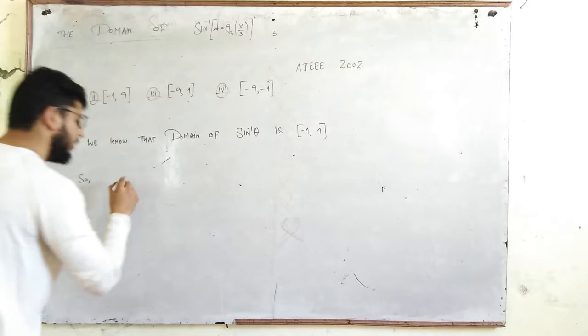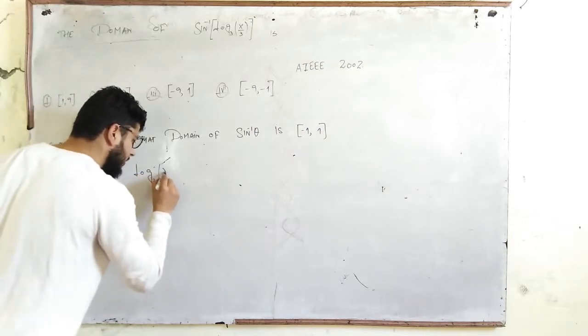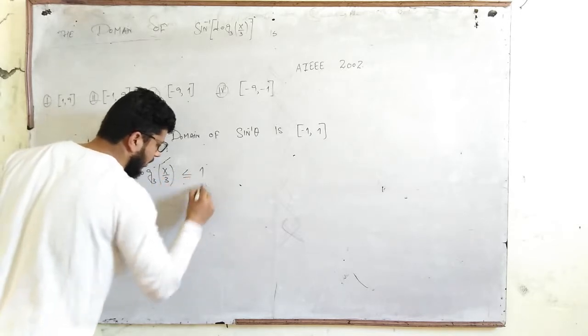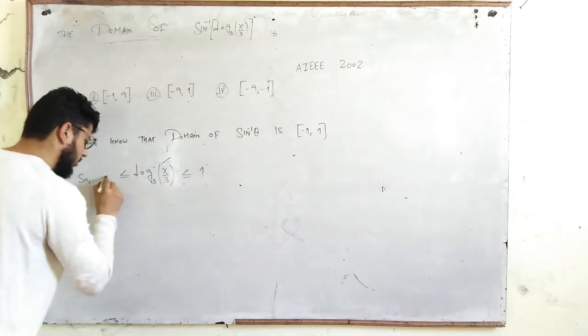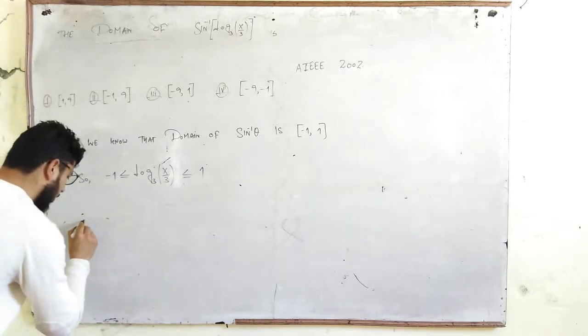So if we use it, we have log₃(x/3) ≤ 1 and ≥ -1. Now we will apply the base change formula.